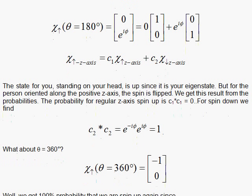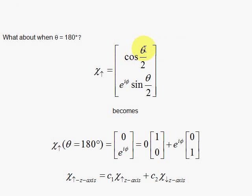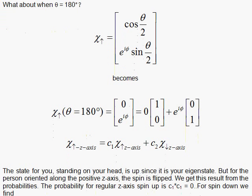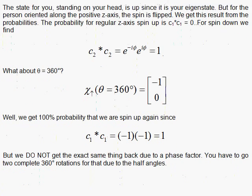And then if you go 360, here's another surprise. If you go 360, the angle 360 divided by 2 is cosine of 180, that's a negative 1, and the sine of 180 is 0. So you get the same physics if you go 360. This is back to the z-axis. So the probability that we're spin-up here is c1 star c1, which is 1. But that's a little weird that you've got that minus 1 showing up, even though the physics is the same.